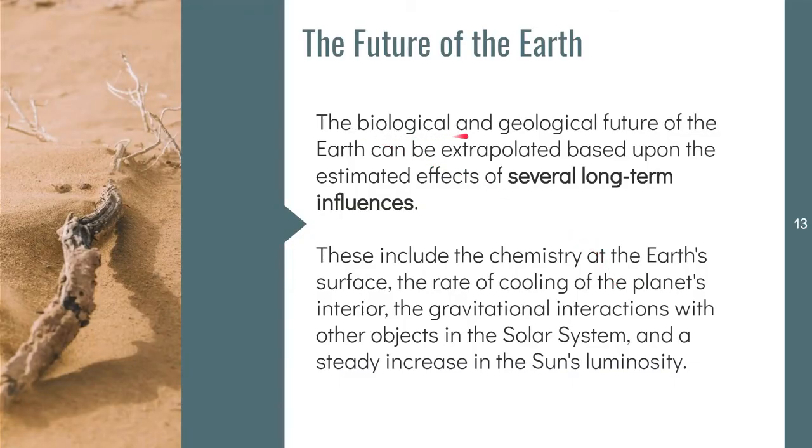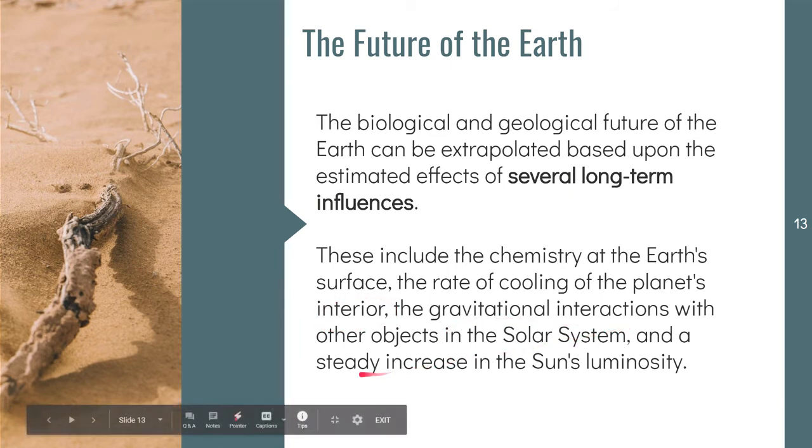The biological and geological future of our planet can be extrapolated based on what has happened in the past and taking into consideration several long-term influences. We know what happened in the past and what's happening at present, so we can predict what's happening in the future. However, we have to factor in some long-term effects including the chemistry of the Earth's surface, the rate of cooling of our planet's interior, the gravitational interactions with other objects in the solar system, and the steady increase in the sun's luminosity.